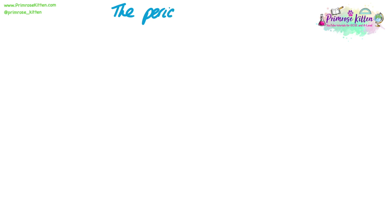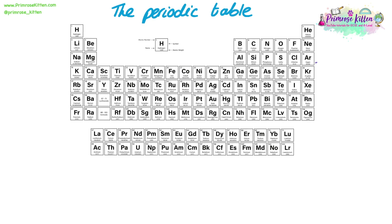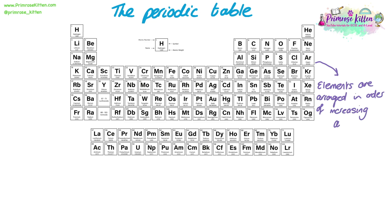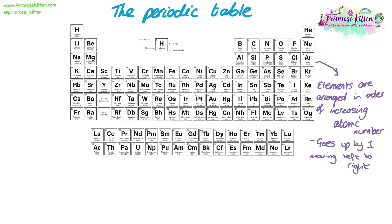In this video we're going to look at the periodic table. In the periodic table the elements are arranged in order of increasing atomic number. This means as you move left to right across a row the atomic number goes up by one each time. For example, starting with aluminium and moving across to argon, we go from 13 to 18, going up by one each time.